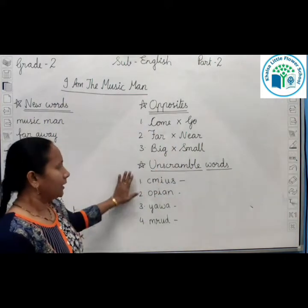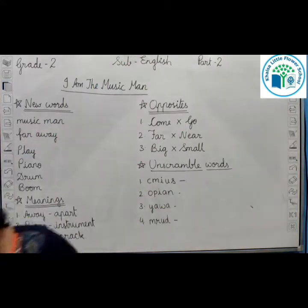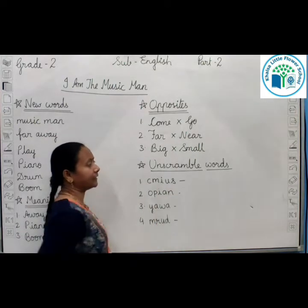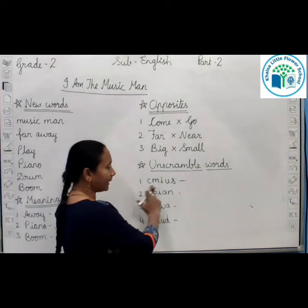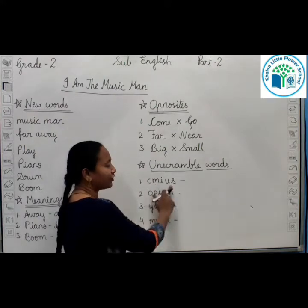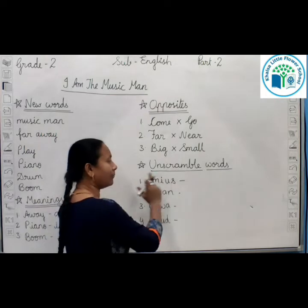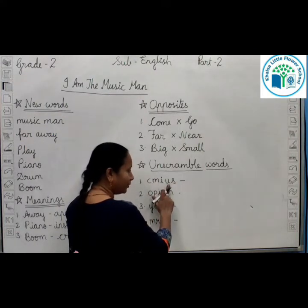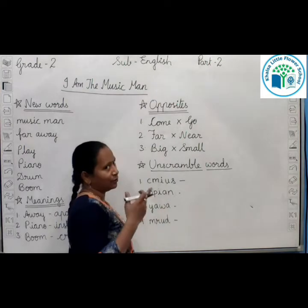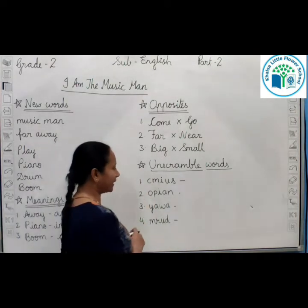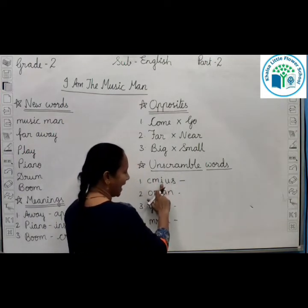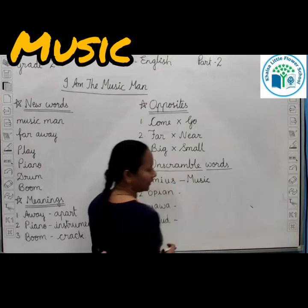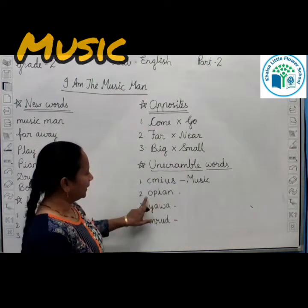There are three opposite word pairs only. Now one more exercise: unscramble words. Children, what we have to do here is rearrange the given jumbled letters to form the correct word. For example, A-C-M-I-U-S is a wrong word — it has no meaning. Rearrange these letters and you get M-U-S-I-C, music. The first letter should be capital. Music is the right word.